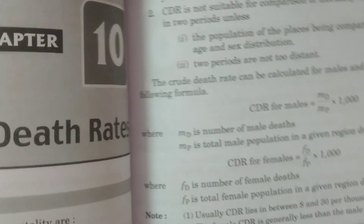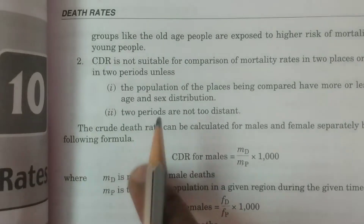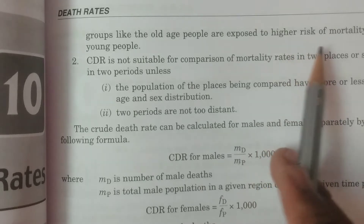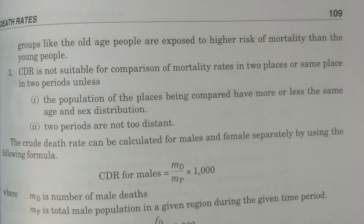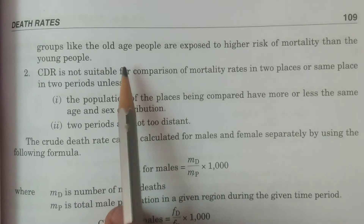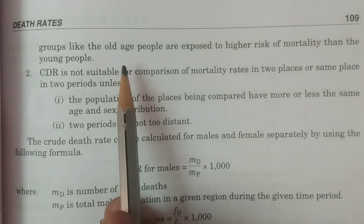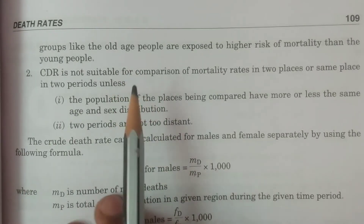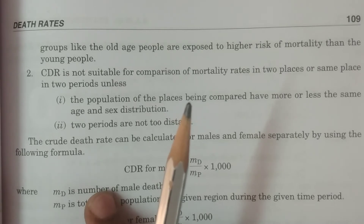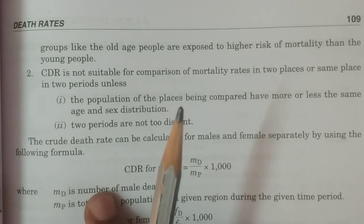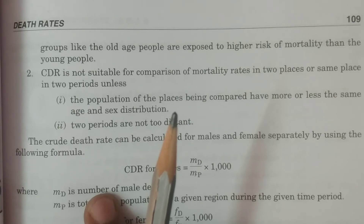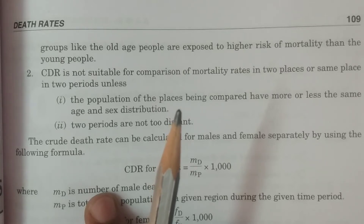Mortality is different in various age groups - old age people are exposed to a higher risk of mortality than young people. CDR is not able to include these factors; it ignores them. Similarly for sex, different kinds of mortality patterns are observed for male and female separately. Therefore, for different sex - male and female - we have to calculate the death rates separately.